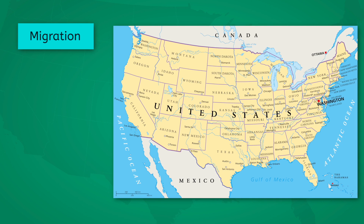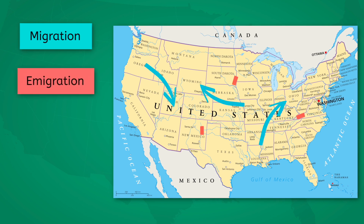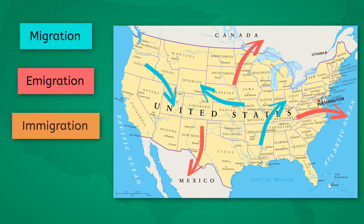Remember, internal migrations involve the movement of people within a single country, while emigration refers to the moving out of a country, and immigration refers to the moving into a country.